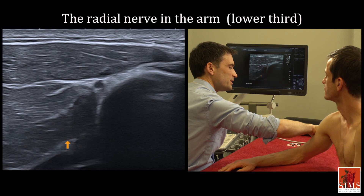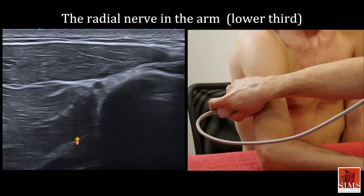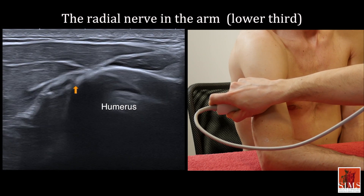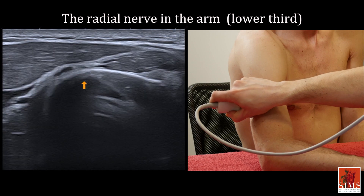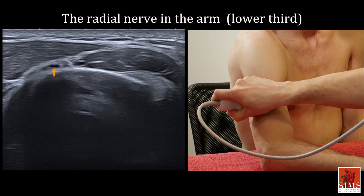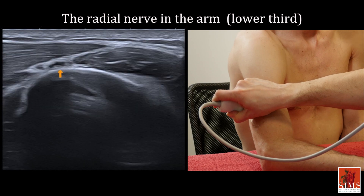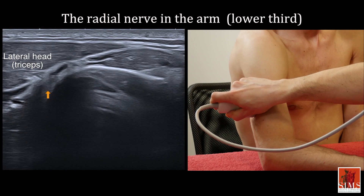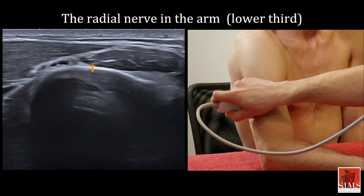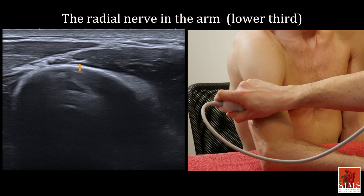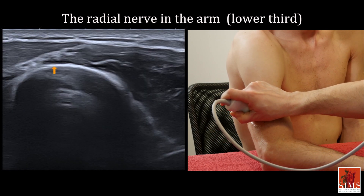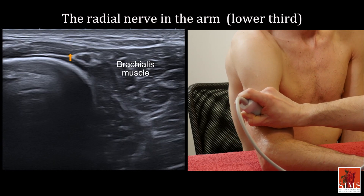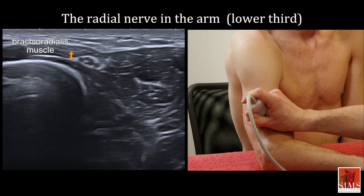The examination continues by positioning the transducer on the posterolateral surface of the upper arm, where the radial nerve is again seen in contact with the bone cortex. It then comes to the lower third of the anterolateral surface of the arm, piercing the lateral intermuscular septum between the lateral head of the triceps brachii and the brachialis, indicated here by the arrow. The radial nerve is then clearly seen between the brachialis muscle and the brachioradialis muscle, here in a superficial position.